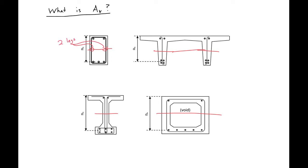So our AV would be equal to two times the area of whatever bar we have. So if we had a number four bar, it would be two times the area of our number four bar.